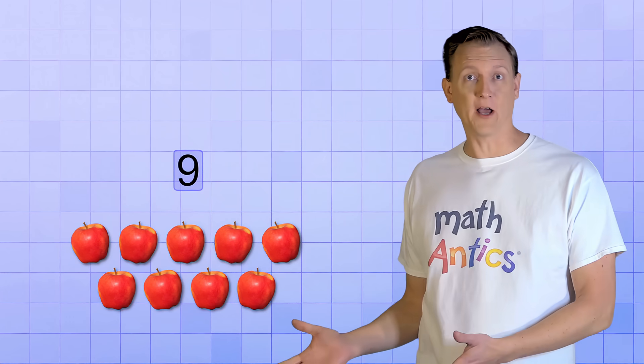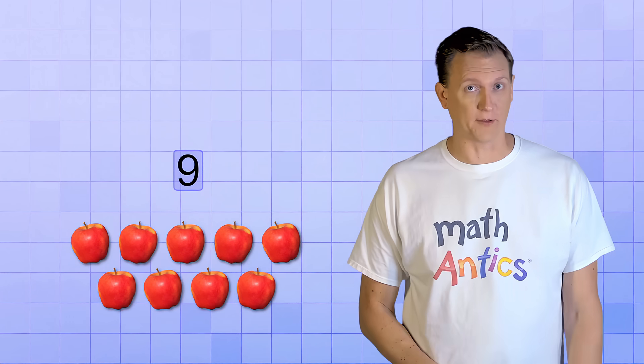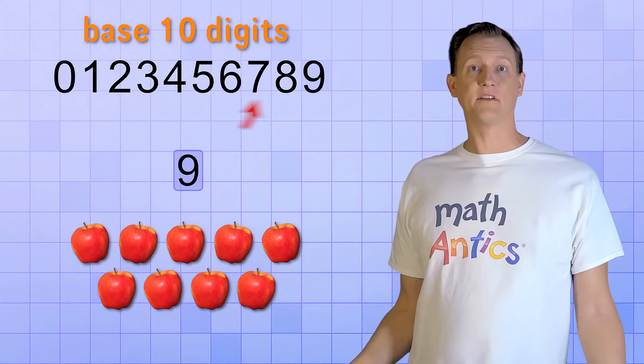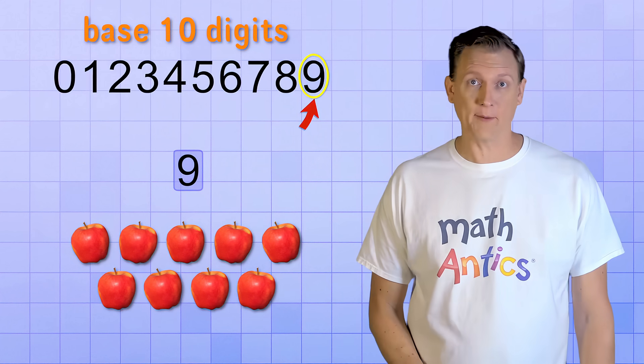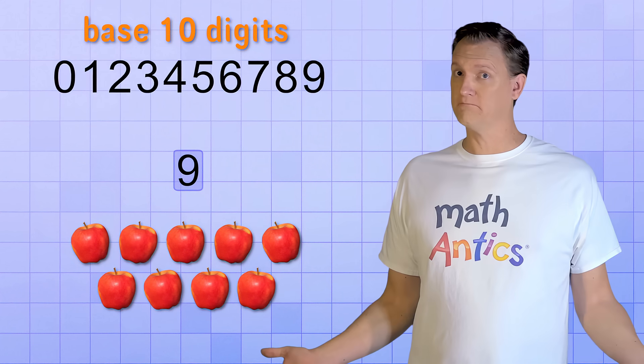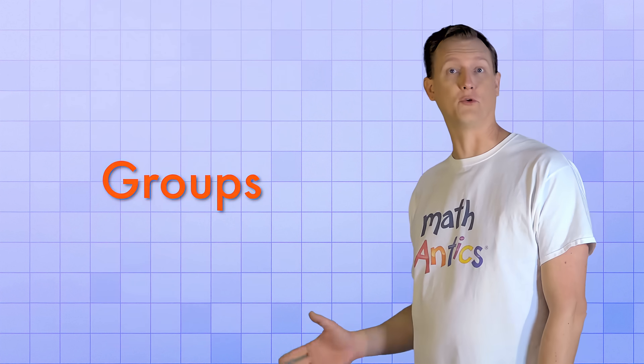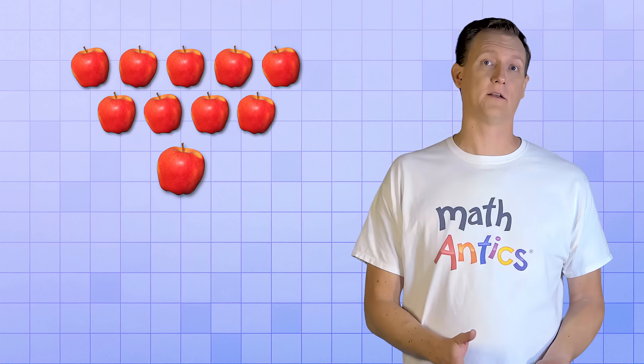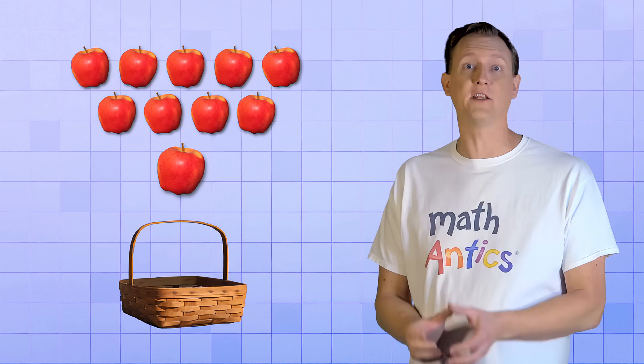Okay, now we've got 9 apples, but we've also got a problem. We've already run out of digits to count with. The highest digit we have is a 9, but there's a lot more apples left to count. What will we do? The solution is to use groups to help us count. If we pick just one more apple, we'll have 10, right? So let's combine those 10 apples into a single group.